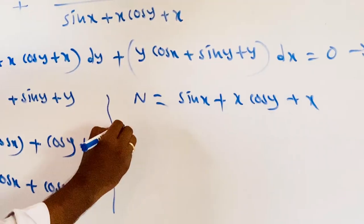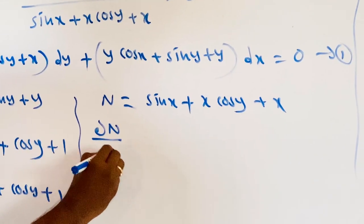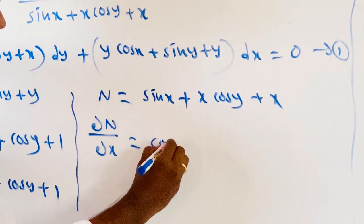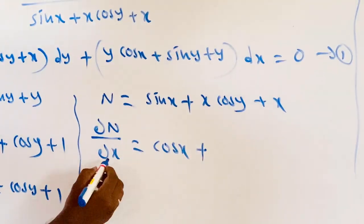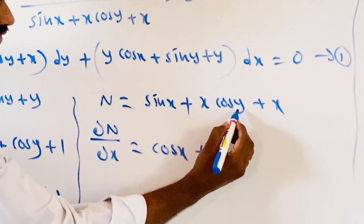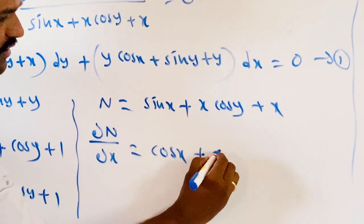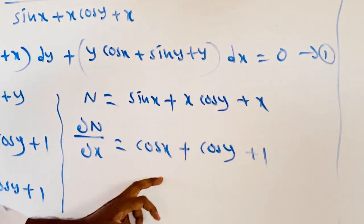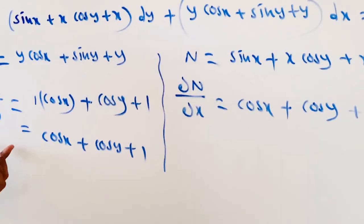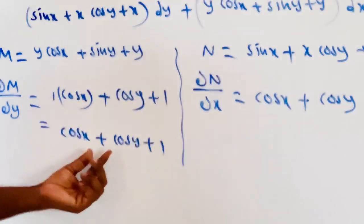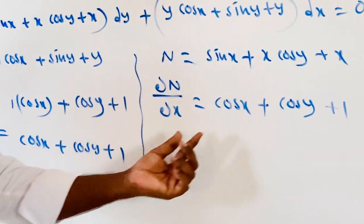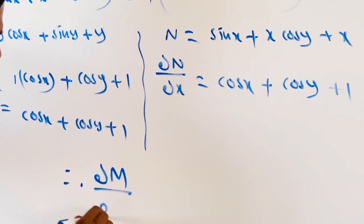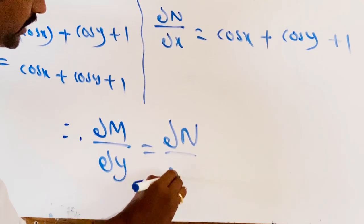Similarly, ∂N/∂x means differentiating N with respect to x. Derivative of sin x is cos x; for x cos y, y is constant so derivative is cos y times 1 which gives cos y; derivative of x is 1. Therefore ∂N/∂x equals cos x plus cos y plus 1. Observe: ∂M/∂y equals ∂N/∂x.